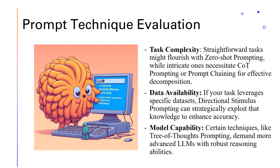Here is another evaluation methodology based on task, data, and model. The complexity of your task is a crucial starting point: for simple requests like translating English to Spanish, zero-shot prompting might suffice; for complex problems like writing a poem analysis, consider Chain of Thought or Tree of Thoughts to break the task into smaller steps. The capabilities of your language model matter too — advanced models with strong reasoning abilities can handle Tree of Thoughts effectively, while basic models may only need zero-shot or few-shot prompting. Finally, data availability influences your choice: if you have a dataset tailored to your task, directional stimulus prompting can guide the model; for tasks with scarce data, focus on general prompt engineering techniques.